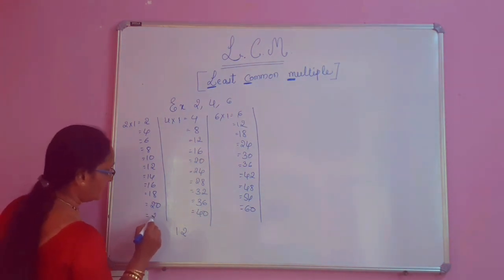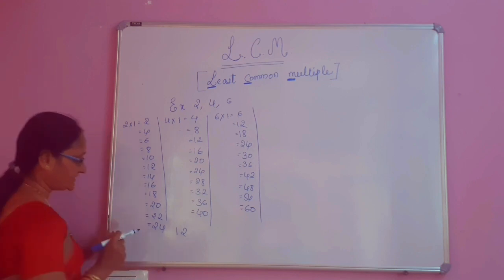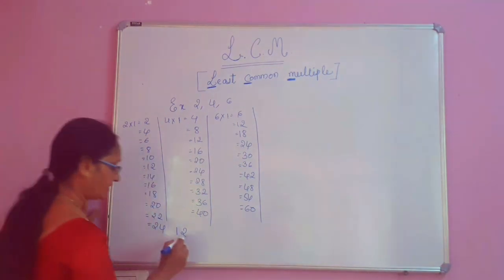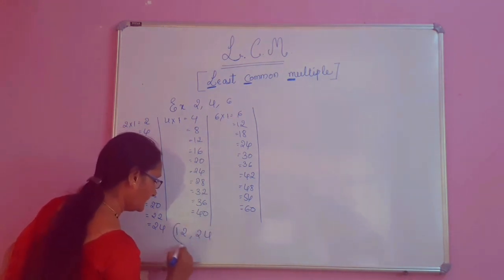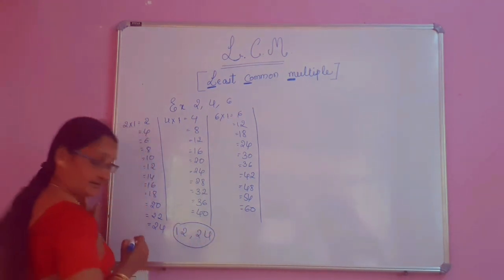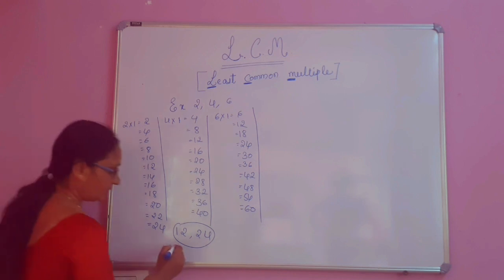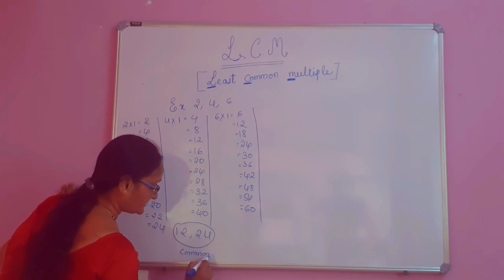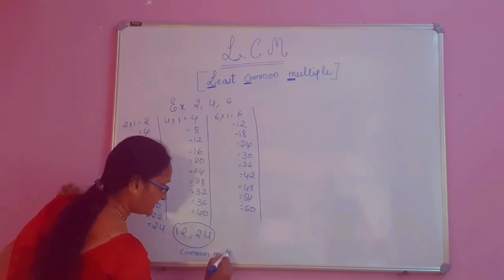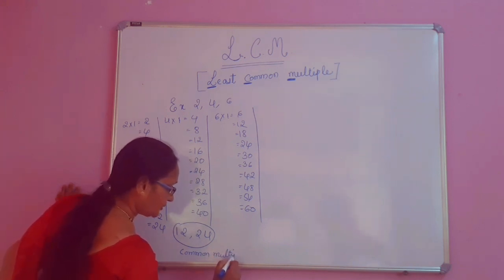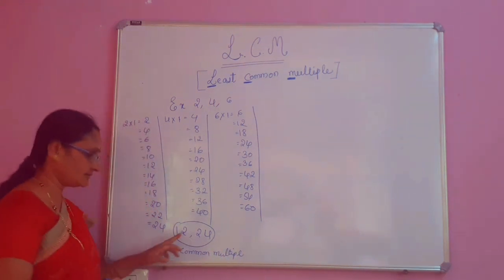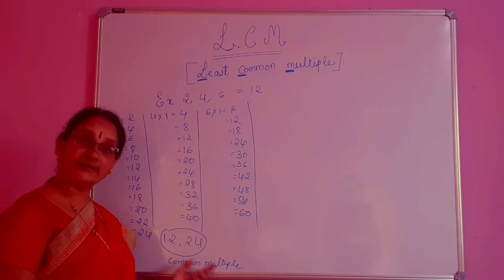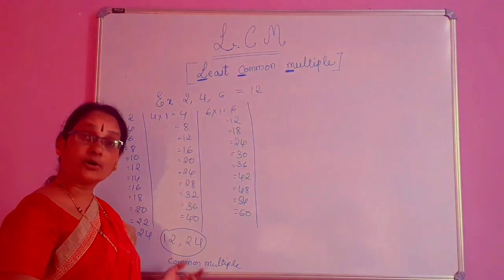2 elevens are 22. 2 twelves are 24. Here see — 24, 24, 24. We have to take 24 here. So which are the common multiples? 12 and 24. These two are the common multiples. Among these, which is the least common multiple? 12 — that is the smallest common multiple.